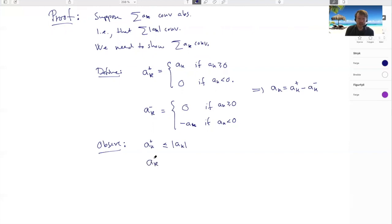And similarly, a_k^- is smaller than the absolute value of a_k. And again, either they're equal to each other or this thing is zero. But what does this mean?